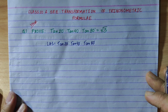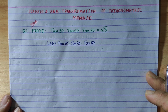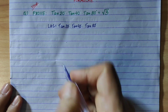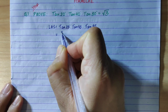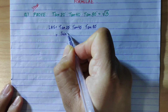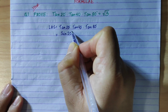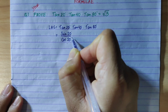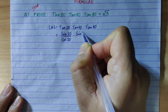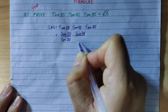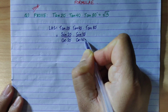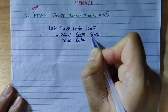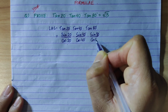I am going to use the tan formula by converting it to sine and cosine. So we write: sin20/cos20 × sin40/cos40 × sin80/cos80.